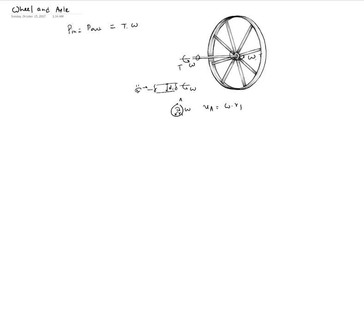Now if you look at the wheel, it has a much larger radius r2, and its angular velocity is also omega. The wheel may be in contact with the ground, but even if it is not, we can compute the velocity of a peripheral point. Let's call that point B, so the velocity of point B equals r2 times omega.